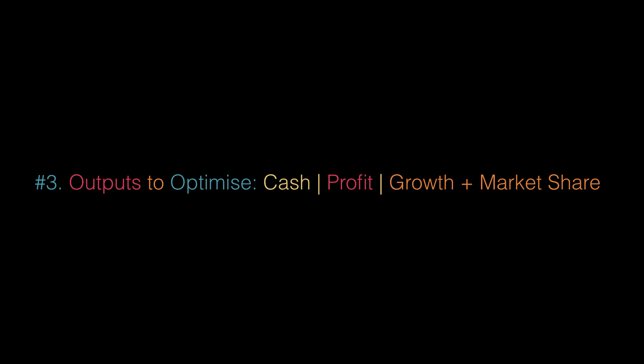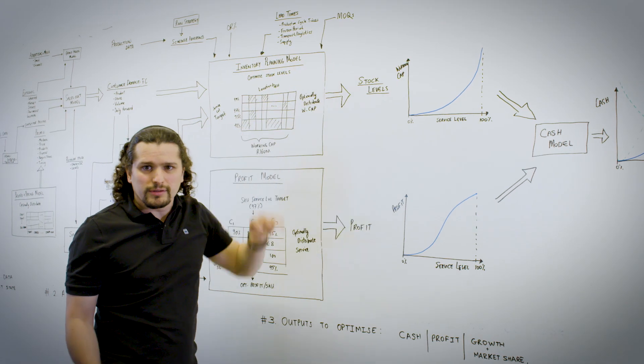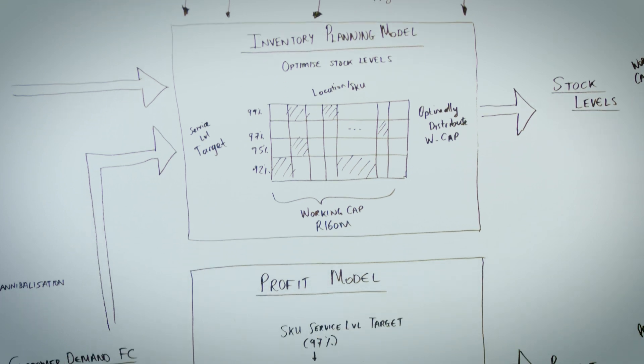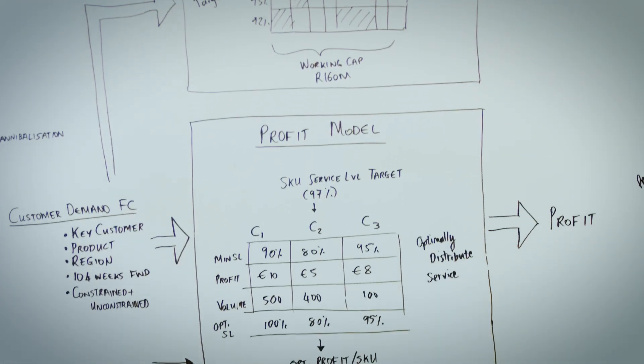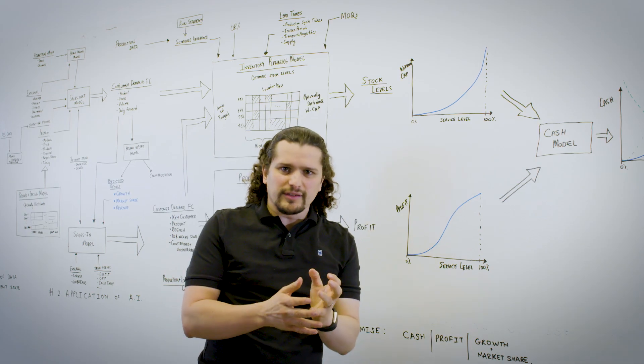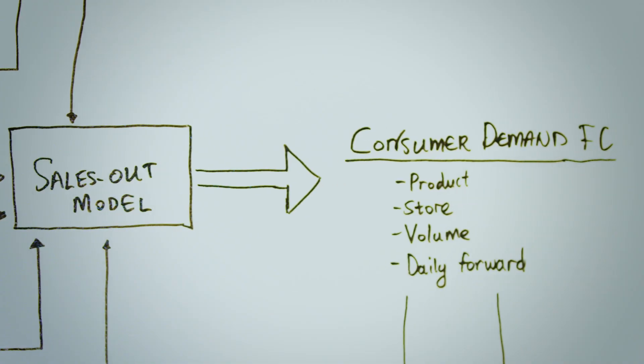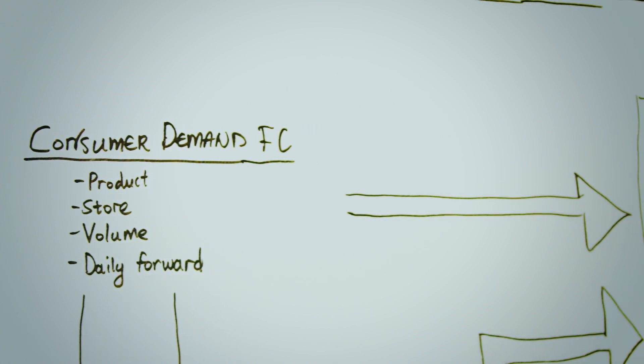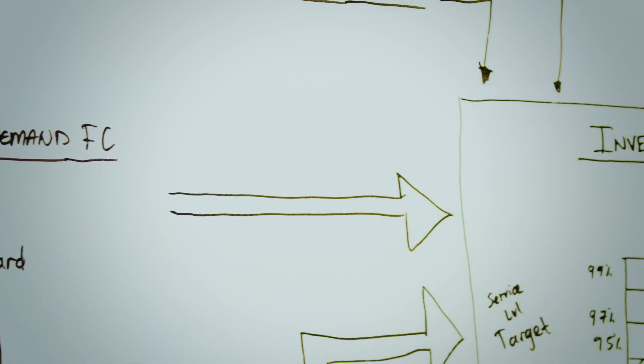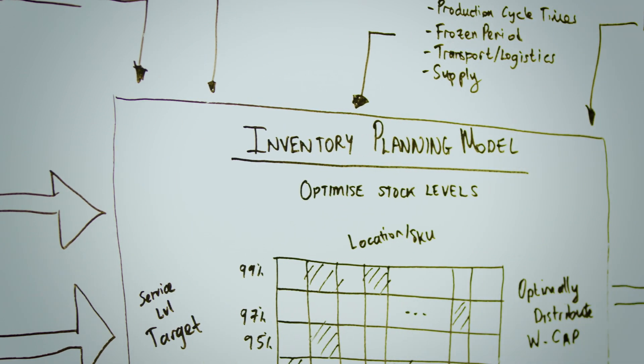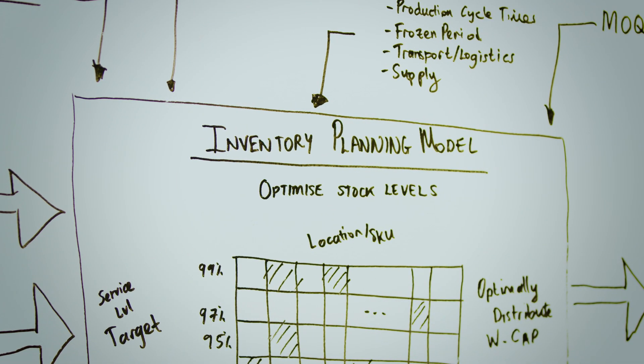This model that we're going to consider now is the inventory planning model. What it allows us to do is model accurately the risk introduced by various parameters within the production cycle, as well as Hudson's demand forecast. The model will give as an output for every product the minimum amount of working capital that will need to be kept in order to achieve each service level.